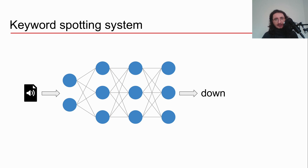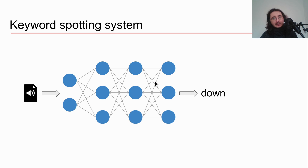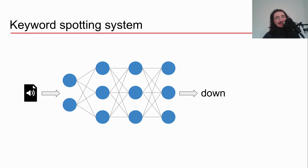Let me show you how a keyword spotting system works with a deep learning model — it's extremely straightforward. As input we have an audio file, we do some transformation, feed it into a convolutional neural network, and get out a prediction which is a keyword — it could be 'down', 'up', 'left', 'right'. In our application specifically we're going to have 10 different labels or keywords.